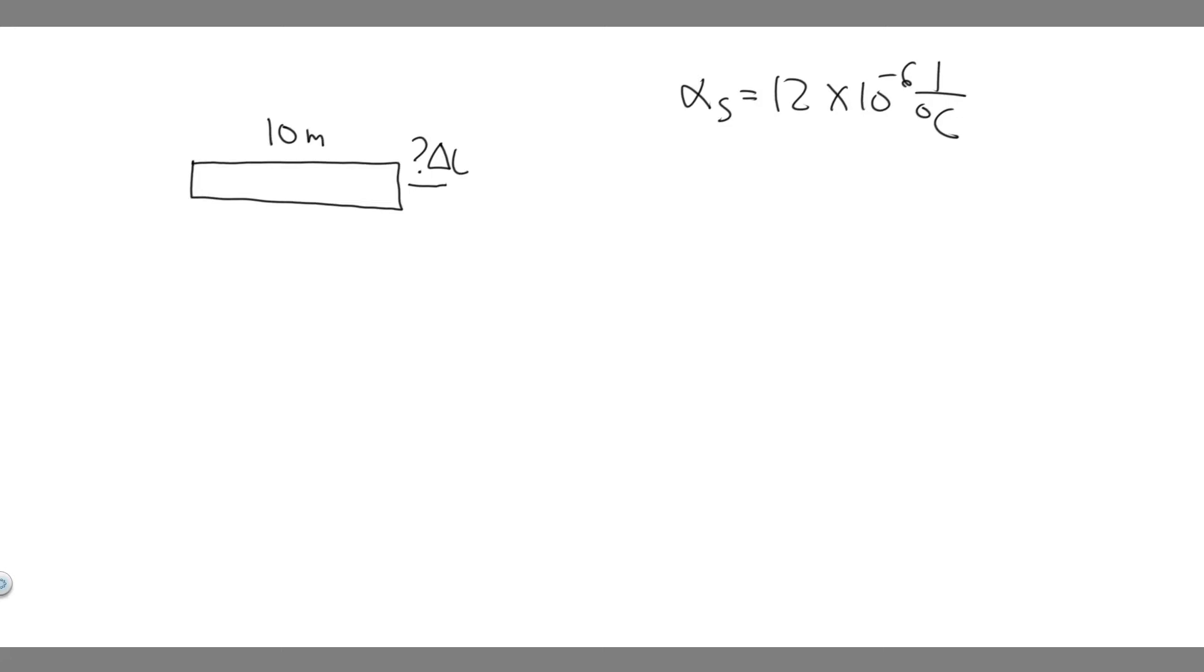In this problem we're told how large an expansion gap should be left between steel railroad rails if they reach a maximum temperature 35 degrees Celsius greater than where they were laid. Their original length is 10 meters.